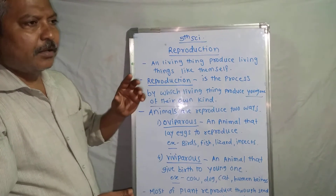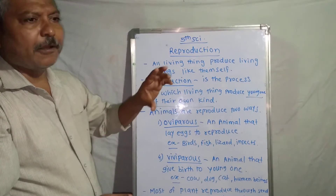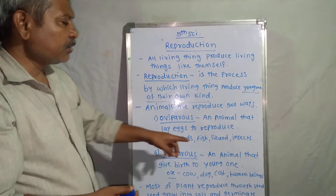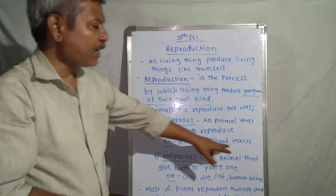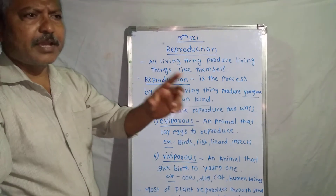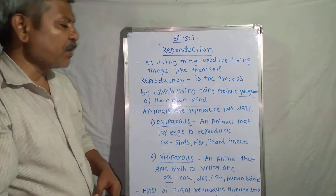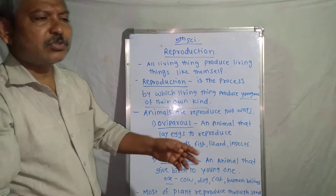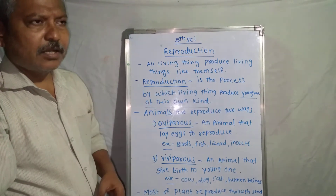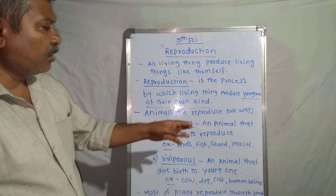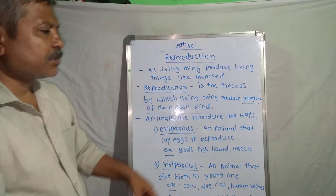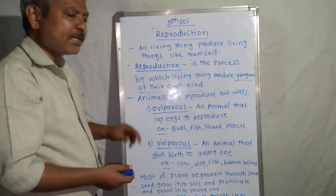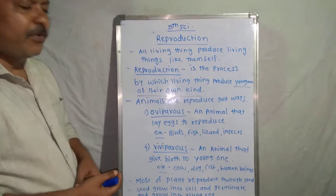Examples of oviparous animals: birds in our surroundings lay eggs — the best example is the hen. We say the eggs of the hen are very big, so we can easily see them. But the eggs of fish and insects are very tiny; we can't see them with our open eyes. Similarly, lizards, house lizards, and other reptiles like snakes also lay eggs.